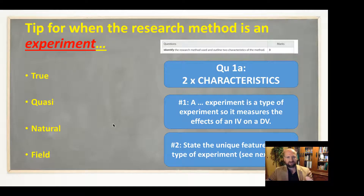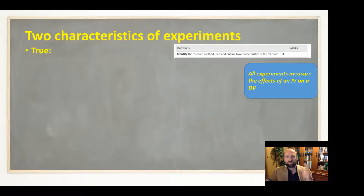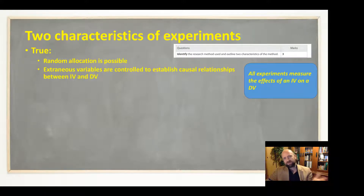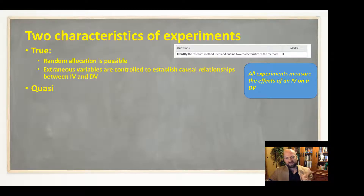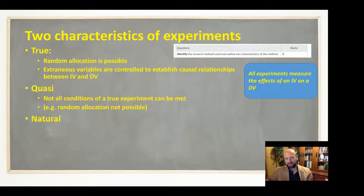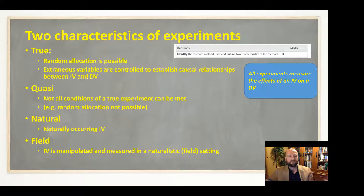The second characteristic is the defining feature that separates each experiment type from the others. For a true experiment, you could mention random allocation, extreme control for extraneous variables, and the ability to establish causal relationships. For a quasi experiment, you'd note that not all conditions of a true experiment can be met — for example, we can't randomly allocate people to a condition. For a natural experiment, the independent variable is naturally occurring. For a field experiment, the IV is manipulated but measured in a naturalistic setting.